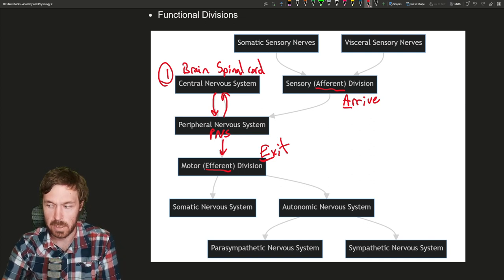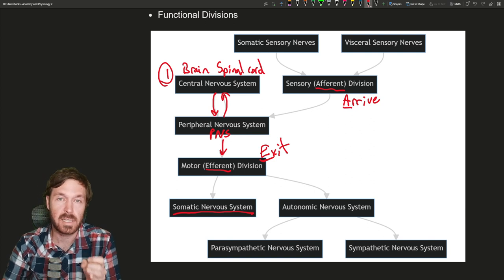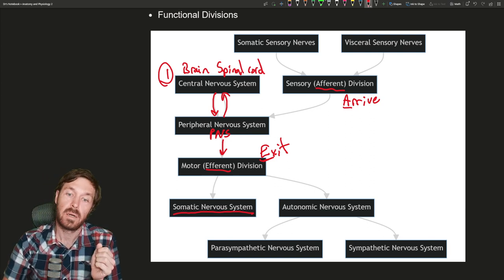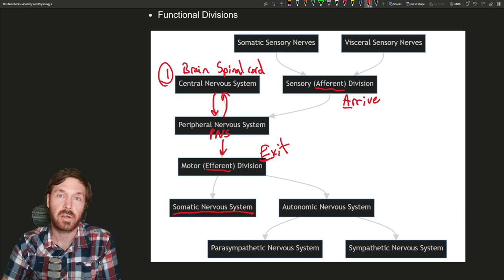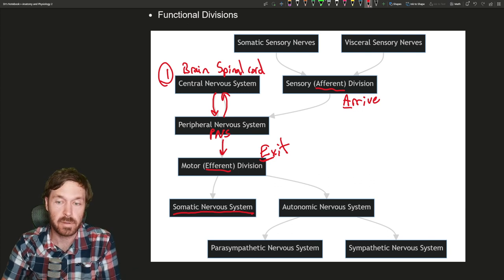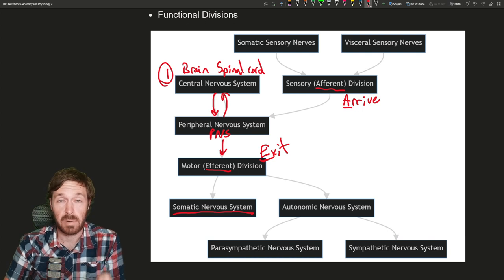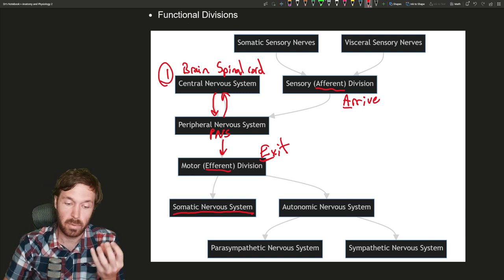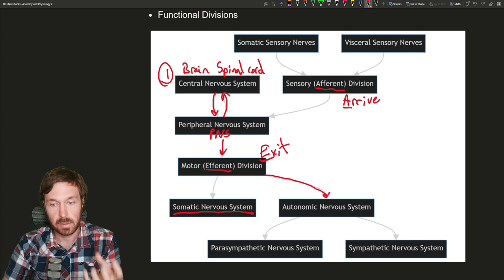I am controlling that output. So if I'm controlling that output, that's called the somatic nervous system. Your somatic nervous system is what you have voluntary control over. Now you have, right now you might be sitting on the couch watching this, sitting in your bed. You are in a restful state, hopefully. That's called rest and digest. Your heart rate is slower, your respiratory rate is slower, your pupils are dilated.